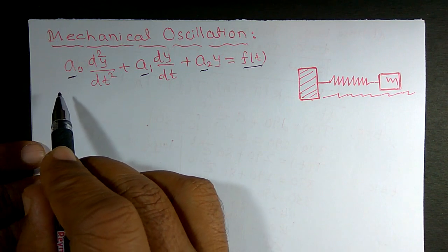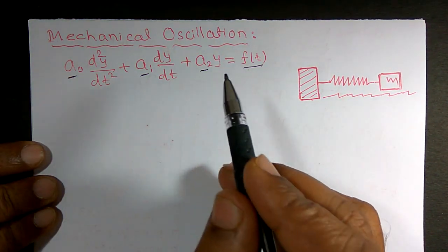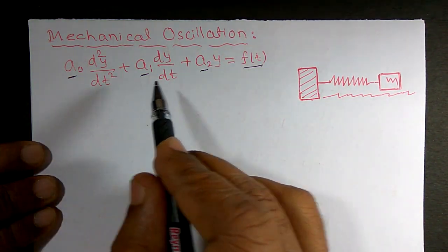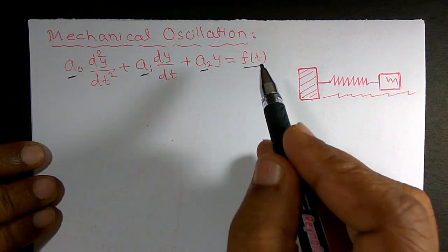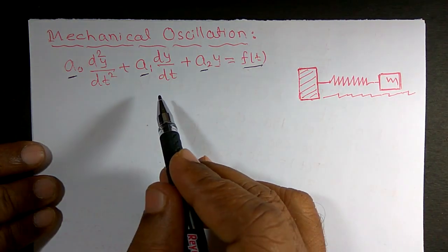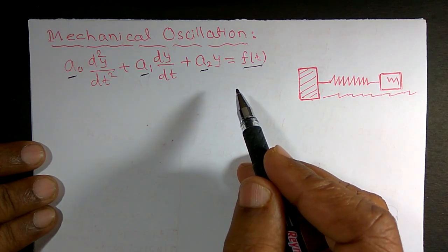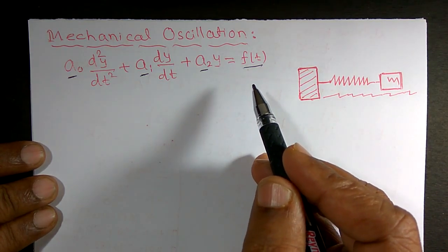So it means that they have given a second order linear differential equation with constant coefficients and the right hand side is not equal to zero. So it means that clearly they have given a non-homogeneous differential equation.